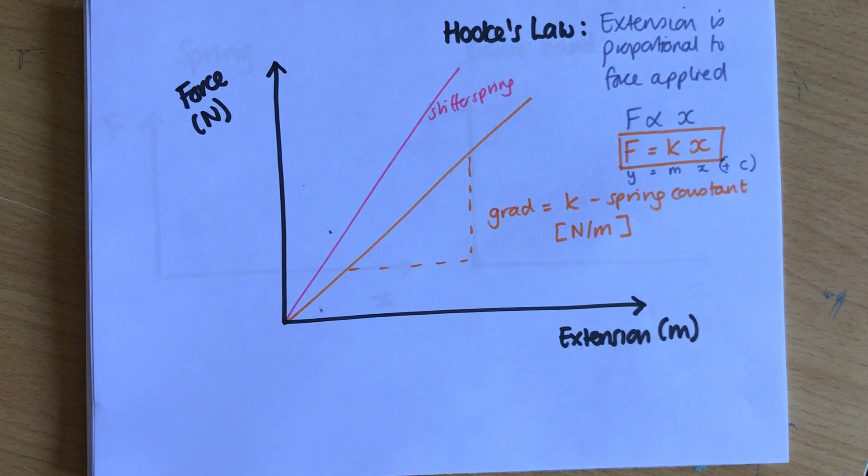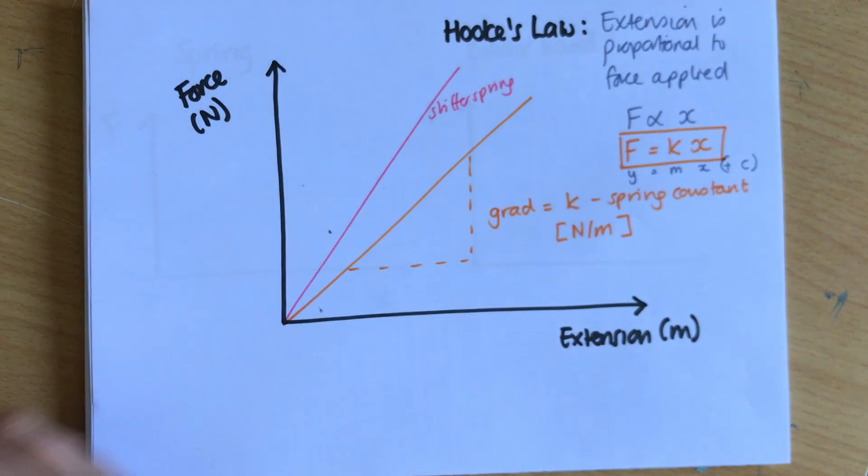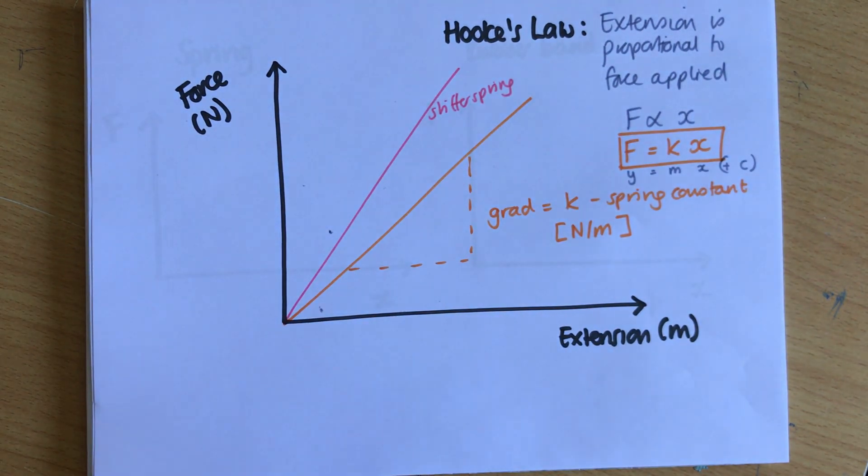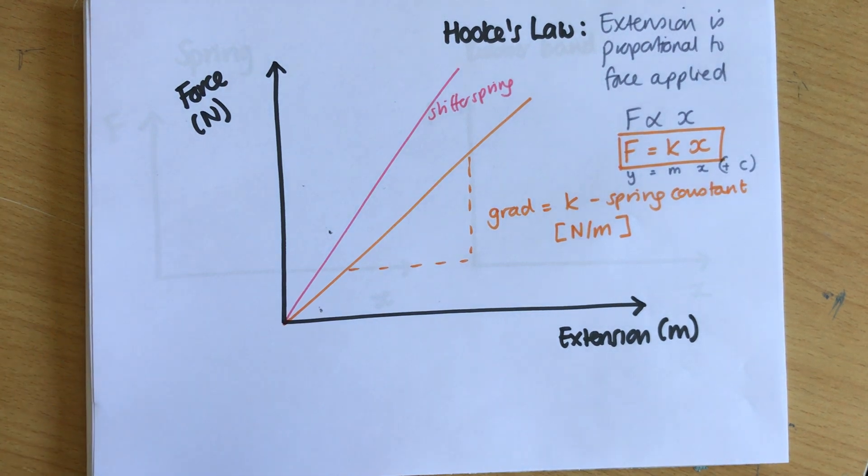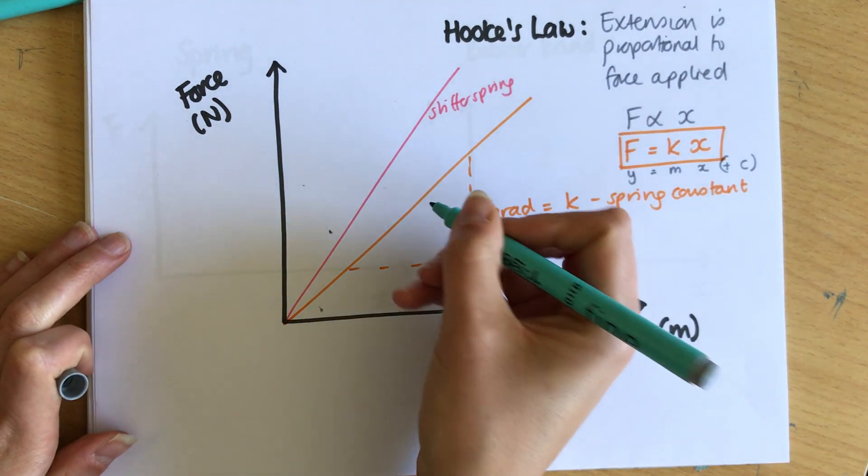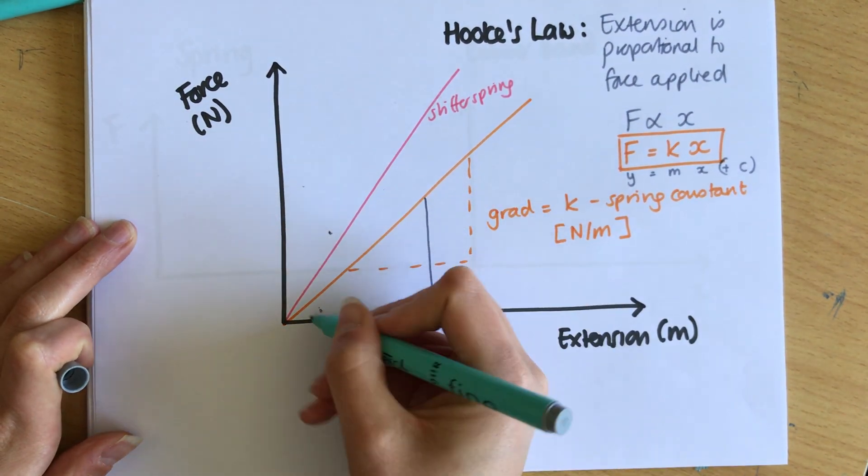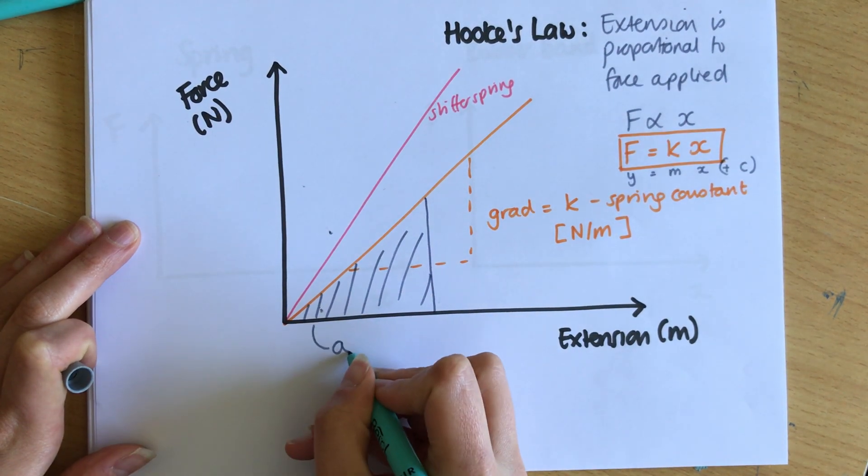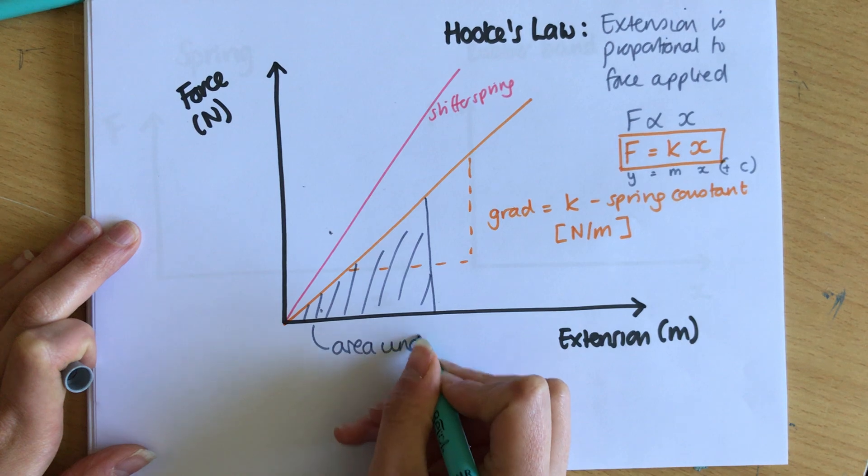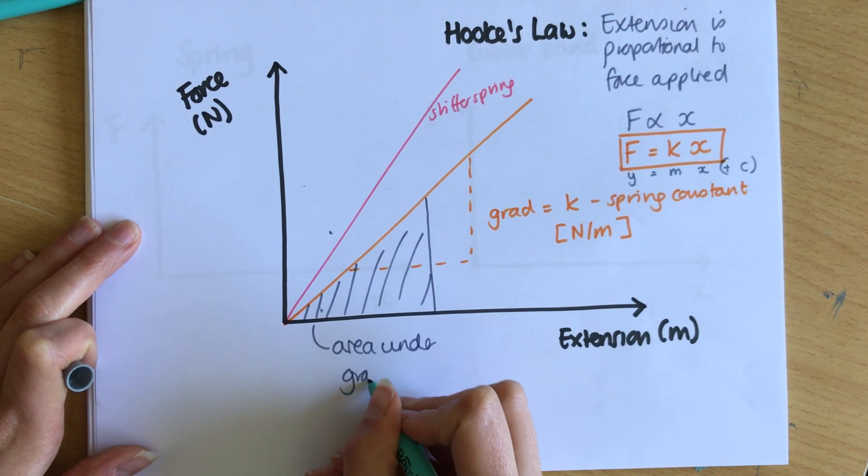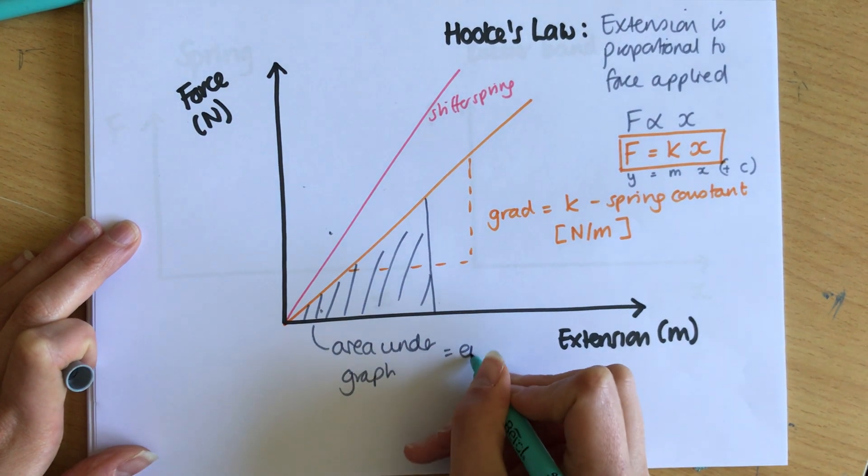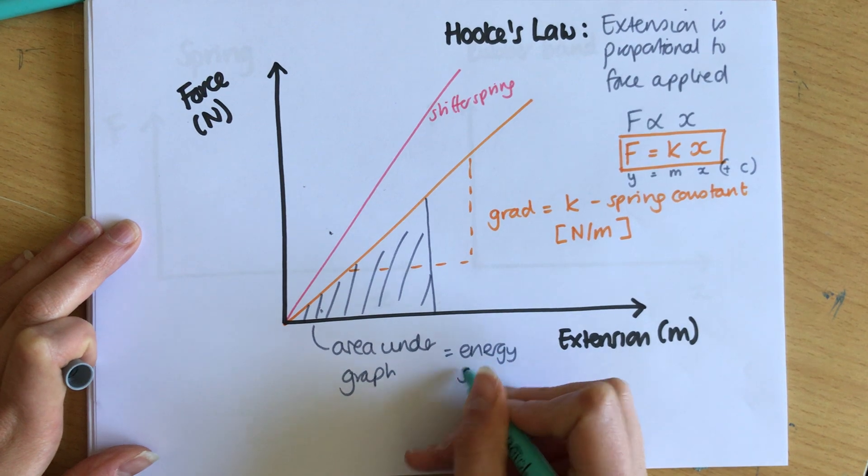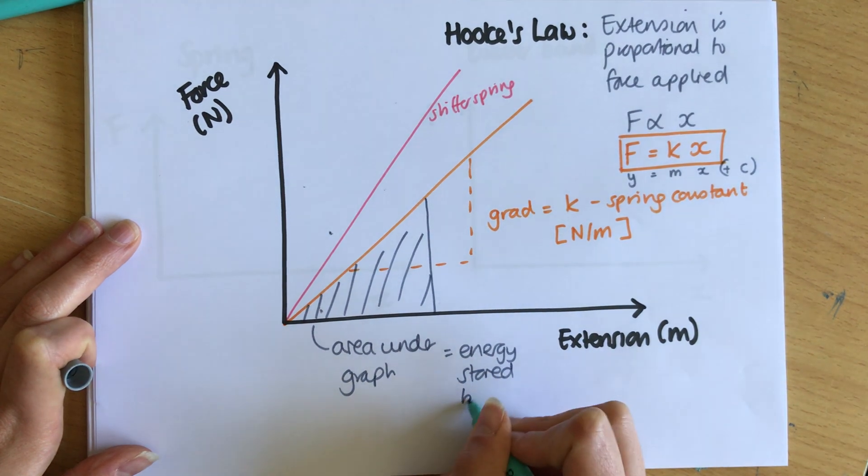Springs obey Hooke's law and we can prove that by plotting a graph of force versus extension and showing it's a straight line—showing that F is proportional to X. There is another thing we can do with this graph and that is we can work out the area underneath. So I could take a section and work out the area under, and the area under the graph is equal to the energy stored by the stretched spring.